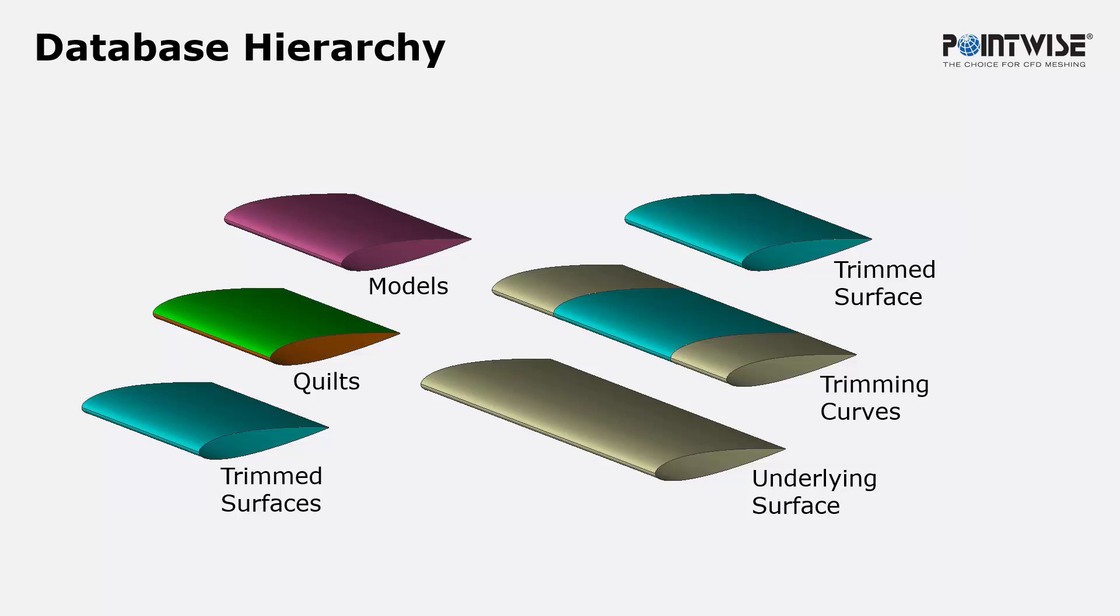I've mentioned models a couple of times. A model is essentially a watertight collection of all of the underlying quilts. And when we mesh a watertight model, that surface mesh is guaranteed to be watertight. And again, each quilt will receive a single domain in that operation. And that's the database hierarchy in PointWise.